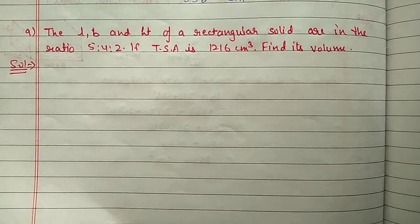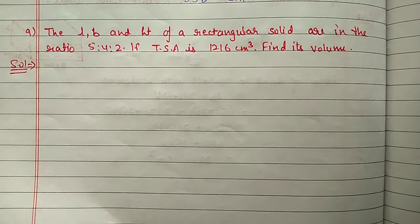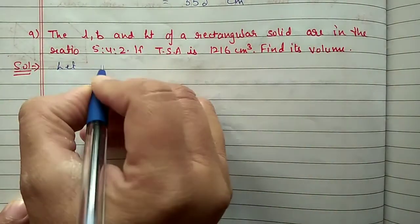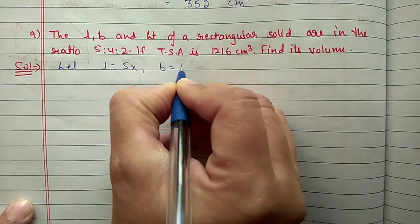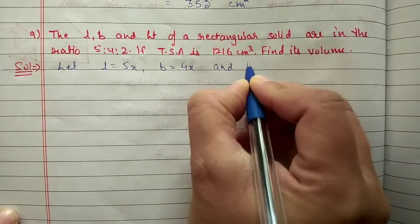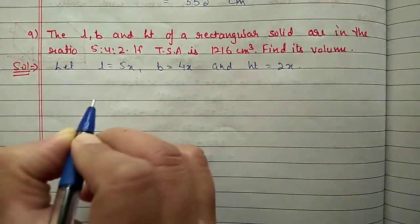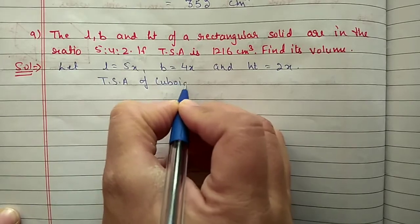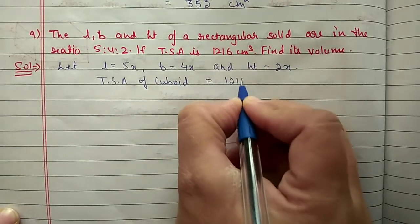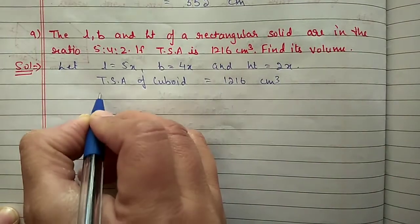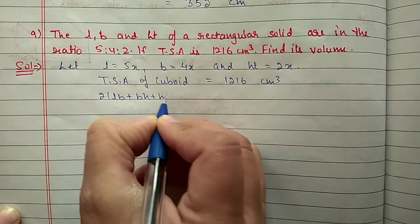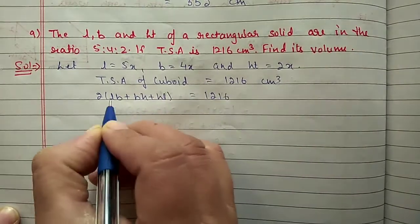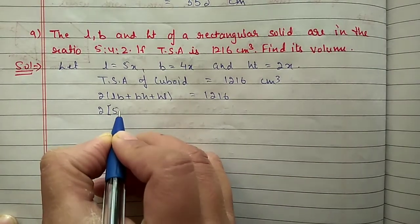Next, question number 9. The length, breadth, and height of a rectangular solid are in the ratio 5:4:2. If the total surface area is 1116 cm², find its volume. Let length be 5x, breadth be 4x, and height be 2x. Total surface area of the cuboid equals 1116 cm², and the formula is 2(lb + bh + hl) = 1116. Substituting: 5x into 4x plus 4x into 2x plus 2x into 5x.